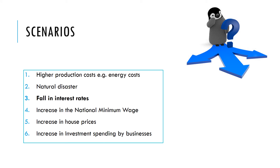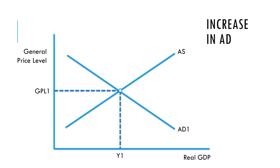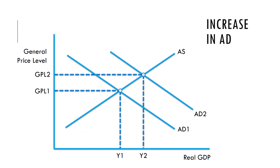What about a fall in interest rates? A fall in interest rates would normally increase consumption and investment, causing an increase in aggregate demand. This would move the economy from its current equilibrium, expanding along the AS curve to a new equilibrium with a higher price level and a higher level of output.